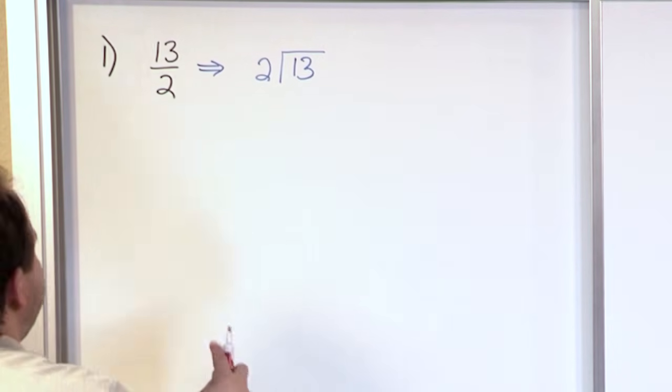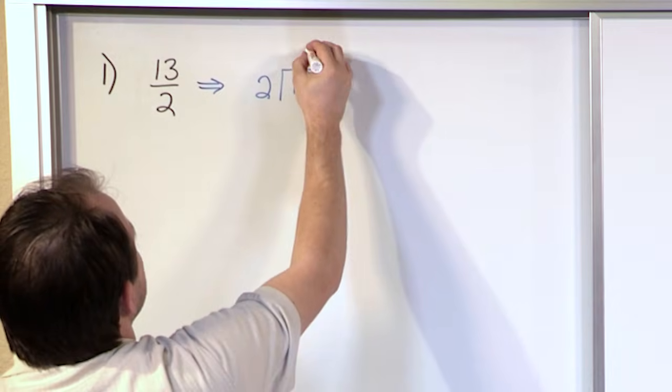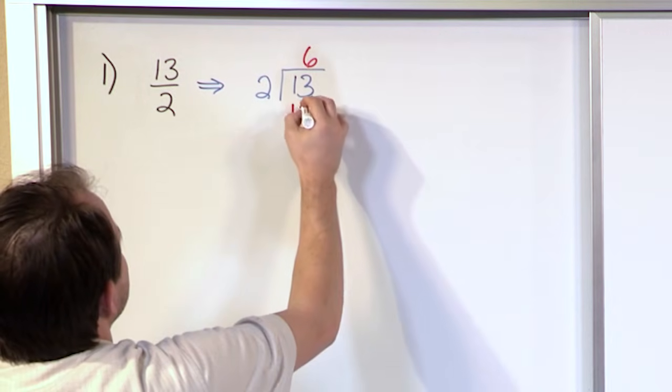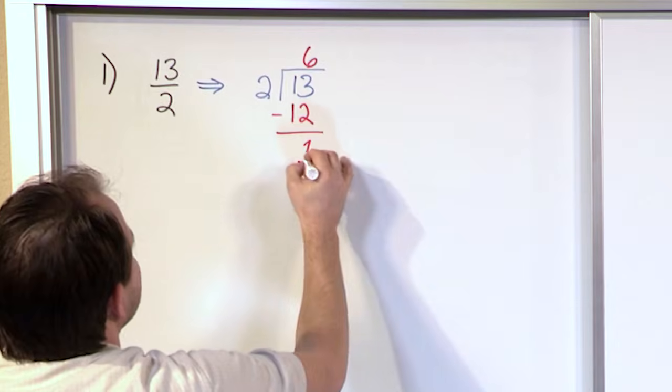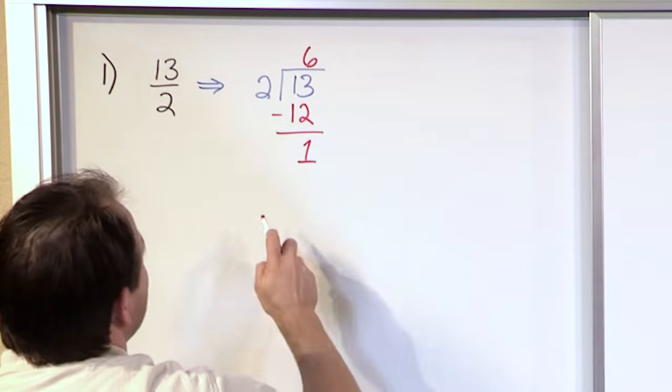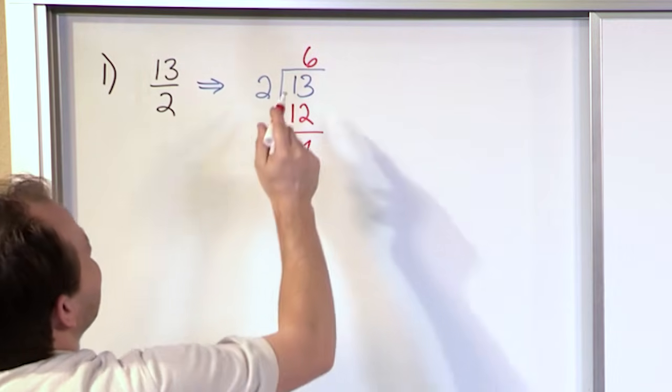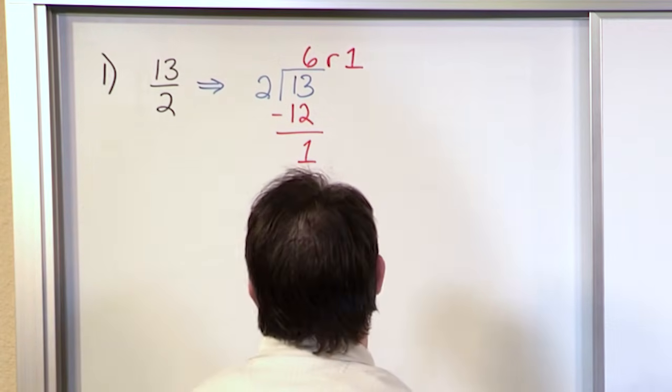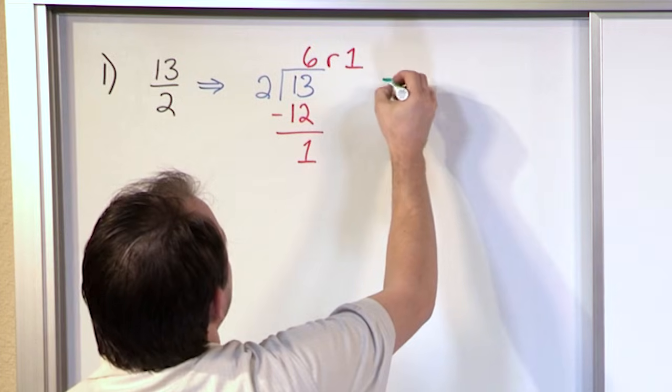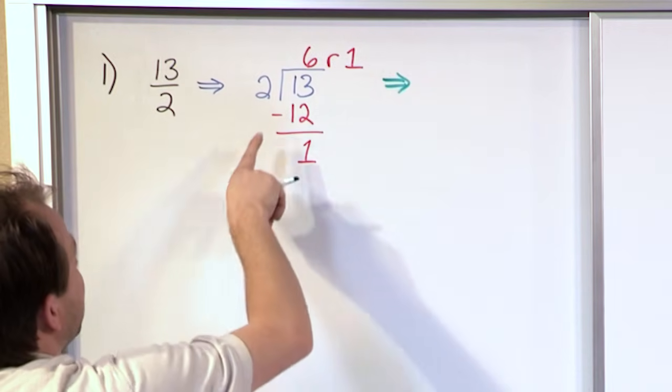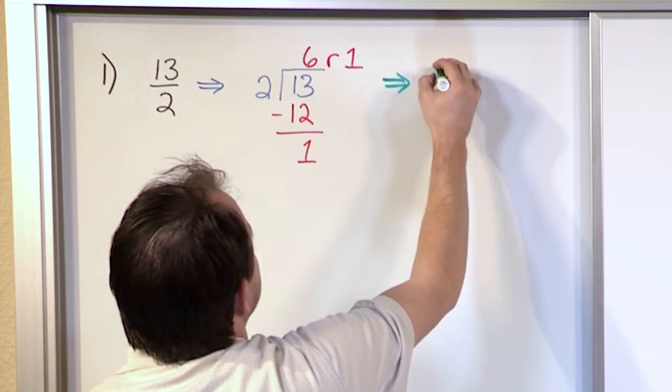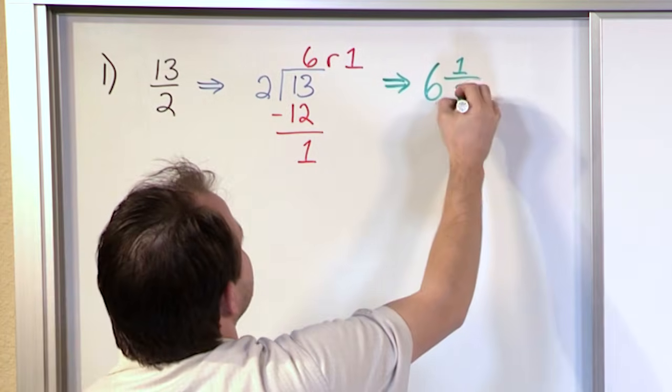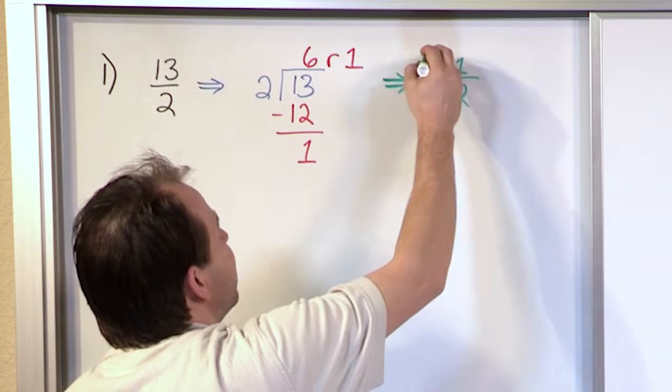So let's take 13 and divide by 2 and see what you have. If we take 2 times 6, that'll be as close as we can get to 13 without going over because 2 times 6 is 12. If we subtract 13 minus 12, we get 1. So the answer to taking 13 and dividing by 2 is 6 with a remainder of 1.